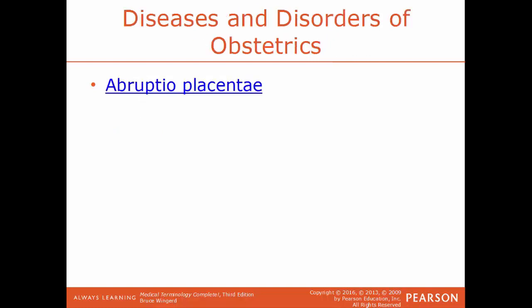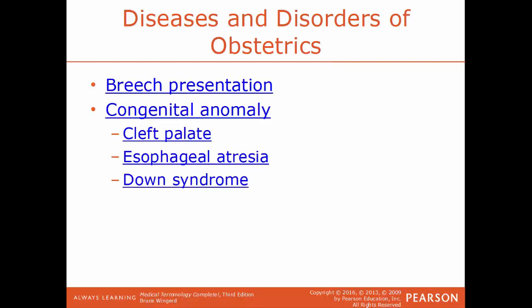Now we'll talk about some specific diseases and disorders of obstetrics. Abruptio placentae is the premature separation of the placenta from the uterus — not common, but a very serious complication of pregnancy. A breech presentation references the position of the fetus during birth — instead of coming out head first like it normally should, it comes out either feet first or buttocks first. A congenital anomaly is another term for a birth defect — any structural or functional abnormalities present at birth.